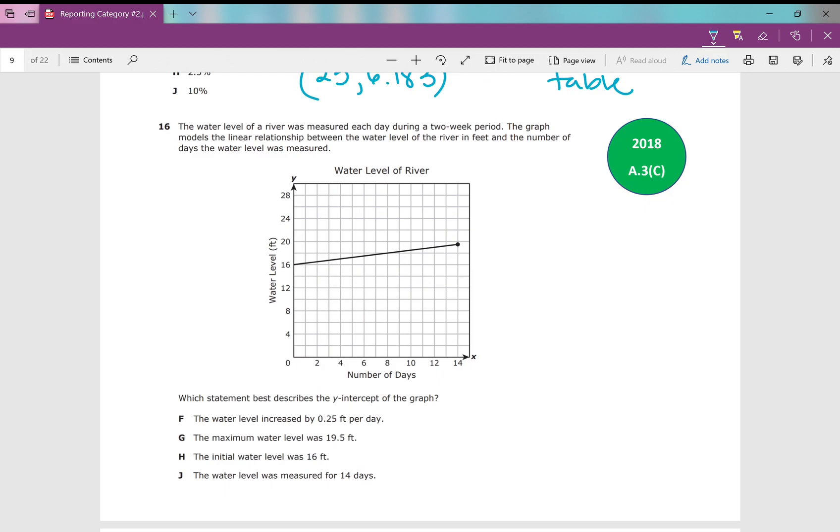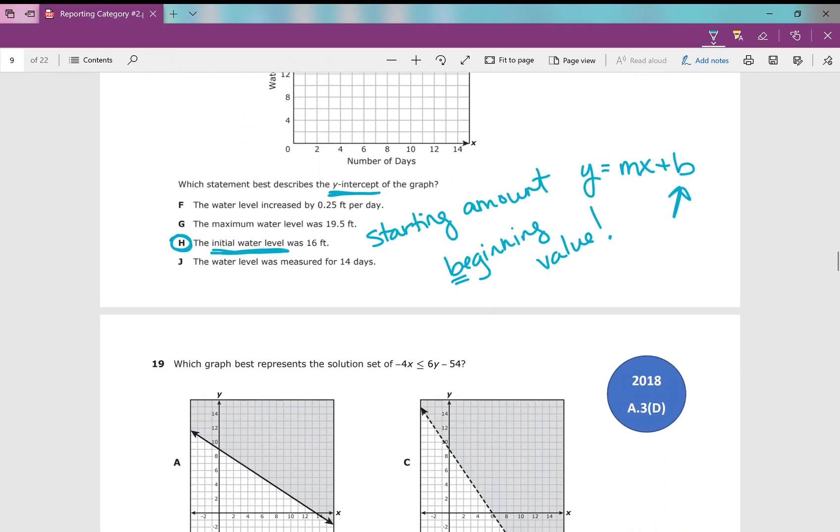Number 16: The water level of a river was measured each day during a two-week period. The graph models the linear relationship between the water level of the river in feet and the number of days the water level was measured. Which statement best describes the y-intercept? That is right here. Your y-intercept, the initial water level was 16 feet. Remember, that is your starting amount, or in the equation y equals mx plus b, that's your beginning value. The initial water level was 16 feet, and then it rose from there.